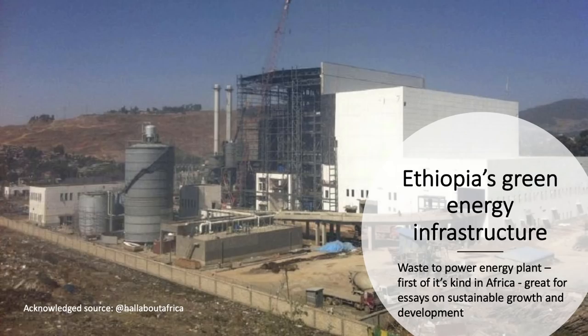Back to energy — here's a really, really good example. In Ethiopia, one of the fastest growing countries in the world, they've just opened the first waste-to-energy power station just outside of Addis Ababa. It's the first green electricity power station in Africa. It's a really important idea in terms of developing a waste-to-power energy plant, and a superb example for any essay on sustainable growth and development.